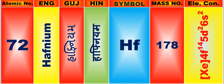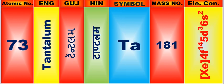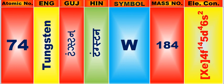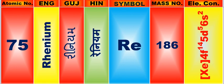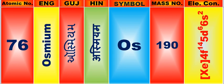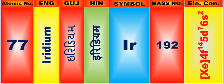Atomic number is 72, name of atom is Hafnium. Atomic number is 73, name of atom is Tantalum. Atomic number is 74, name of atom is Tungsten. Atomic number is 75, name of atom is Rhenium. Atomic number is 76, name of atom is Osmium. Atomic number is 77, name of atom is Iridium.